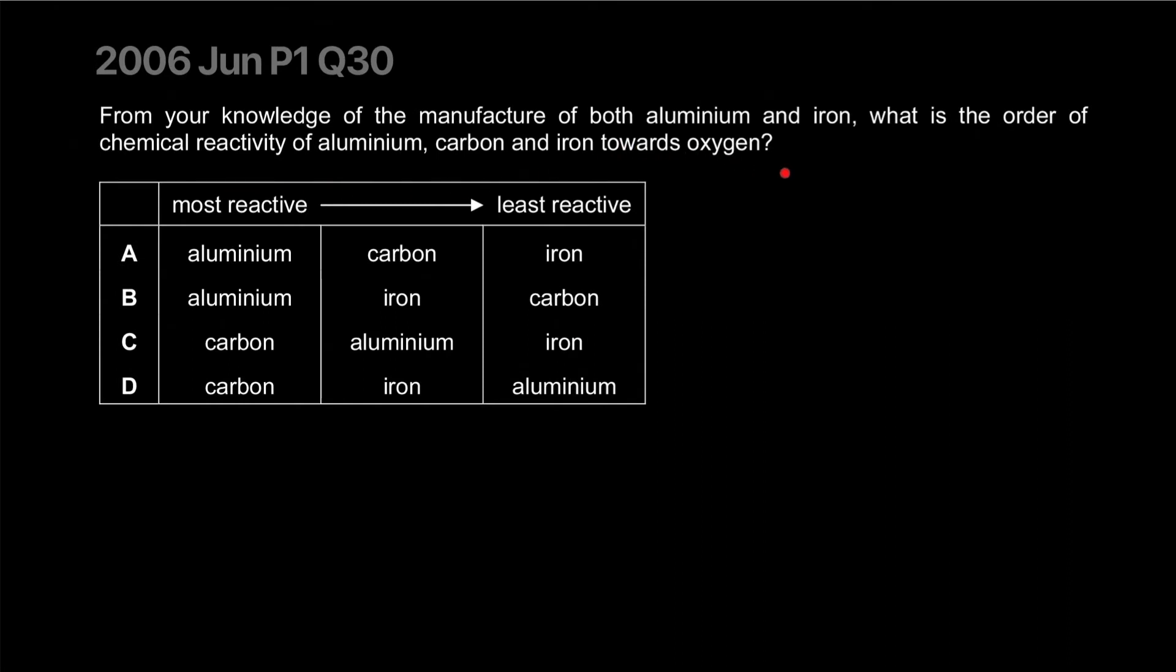From your knowledge of the manufacture of both aluminum and iron, what is the order of chemical reactivity of aluminum, carbon, iron towards oxygen? Towards oxygen? I guess just general reactivity. If it's more reactive it's going to be more reactive towards oxygen. So aluminum... carbon can take the oxygen from iron and leave iron.